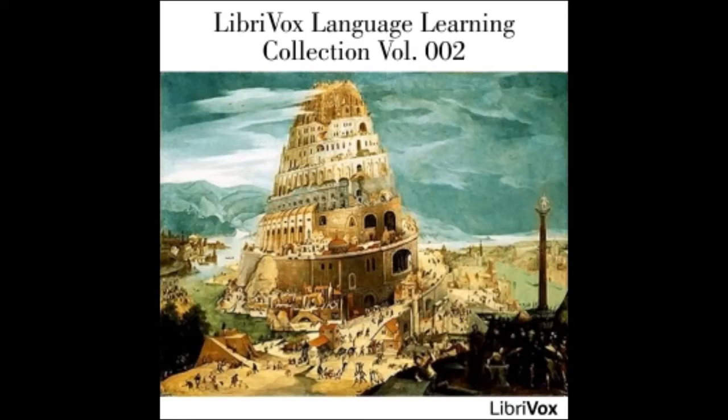Exercice 1. One: avez-vous le livre? Two: oui monsieur, j'ai le livre. Three: avez-vous le fruit? Four: oui madame, j'ai le fruit. Five: avez-vous le verre ou la tasse? Six: j'ai le verre et la tasse. Seven: avez-vous le pain? Eight: non monsieur, j'ai la viande. Nine: ai-je la pomme? Ten: oui monsieur, vous avez la pomme.